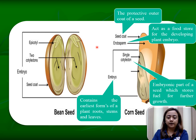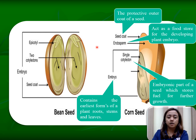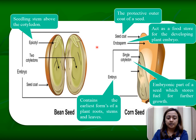Next part, we have the cotyledon — the embryonic part of a seed which stores fuel for further growth. Next part is the epicotyl, the seedling stem above the cotyledon. So those are the parts of a seed.